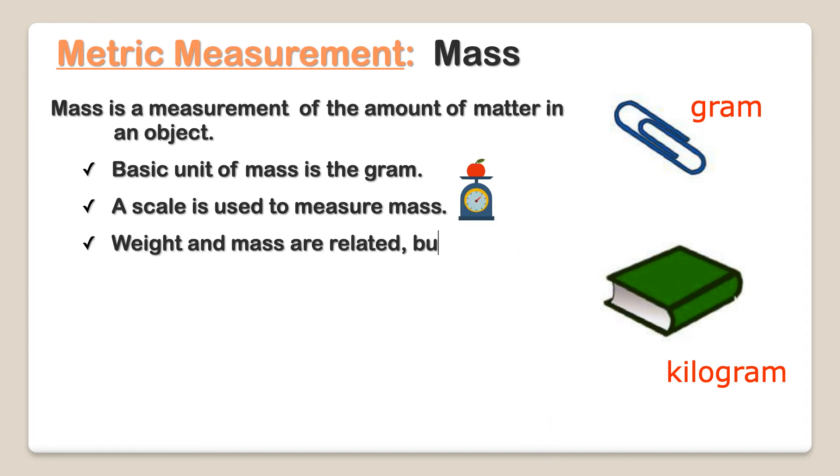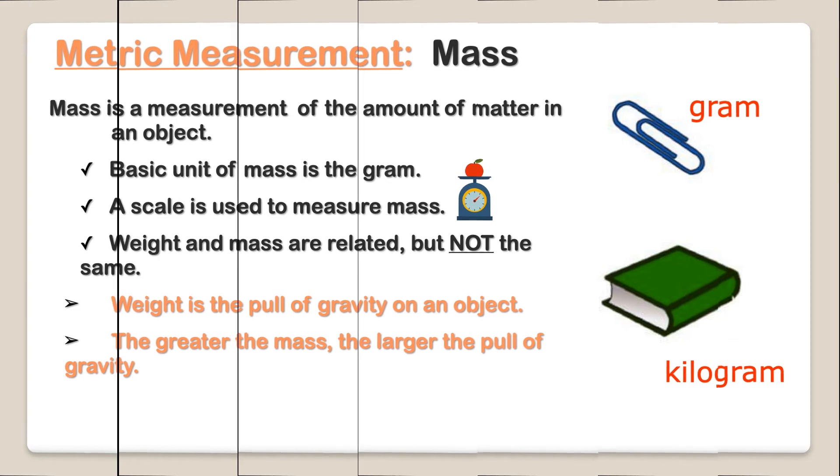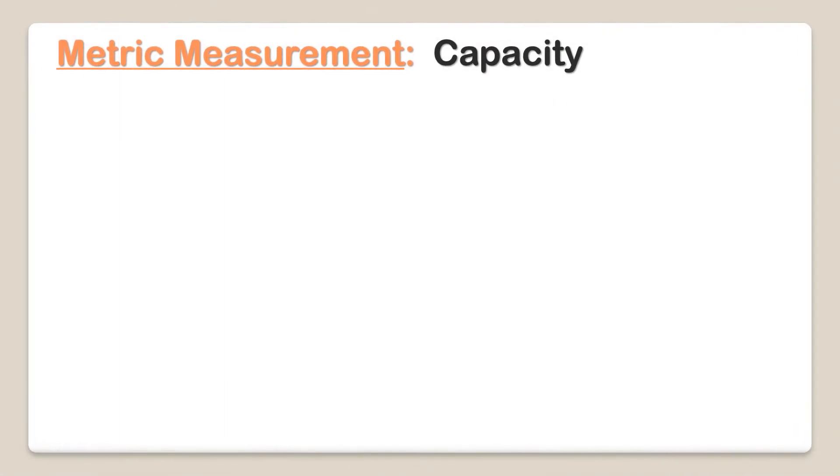Weight and mass are related but not the same. Weight is the pull of gravity on an object. The greater the mass, the larger the pull of gravity. A gram is about the weight of a paper clip. A kilogram is about the weight of a book. Now let's talk capacity.